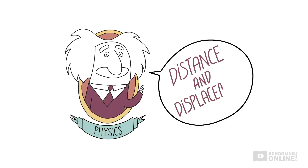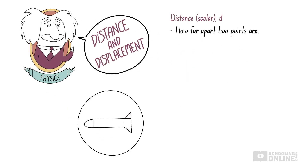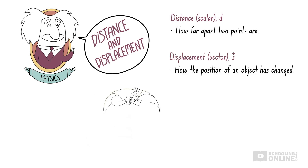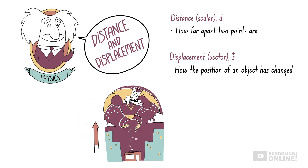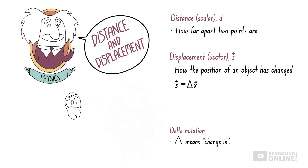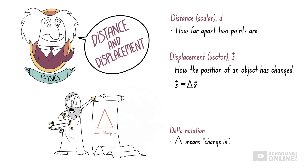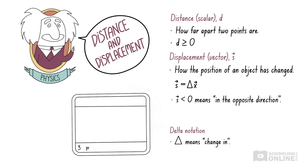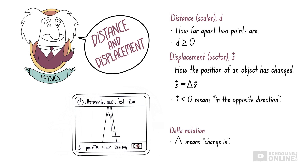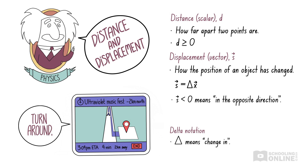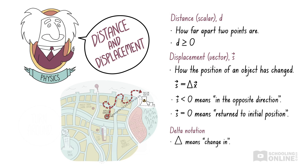Let's revise what we've covered in this lesson. In the HSC Physics course, you will need to understand the key differences between distance and displacement and perform calculations involving both quantities. Distance is a scalar quantity which measures how far apart two points are — it has SI units of metres and is usually represented by lowercase d. Displacement is a vector quantity which measures the change in an object's position — it also has SI units of metres and is represented by a lowercase s with an arrow on top. In physics, the Greek letter delta means 'change in', and we can use delta notation to represent displacement. Distance cannot be a negative number, but displacement can be negative — the minus sign means in the opposite direction. If an object returns to its initial position, its displacement is zero.